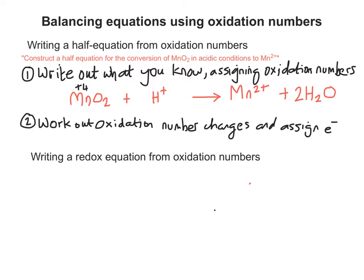So the next thing to do is to work out the oxidation number changes and assign electrons accordingly. If it's a reduction, the electrons will be gained. If it's an oxidation, the electrons will be lost on the right-hand side. So the oxidation number has decreased by 2, so it's a reduction. Therefore, you need to gain 2 electrons.